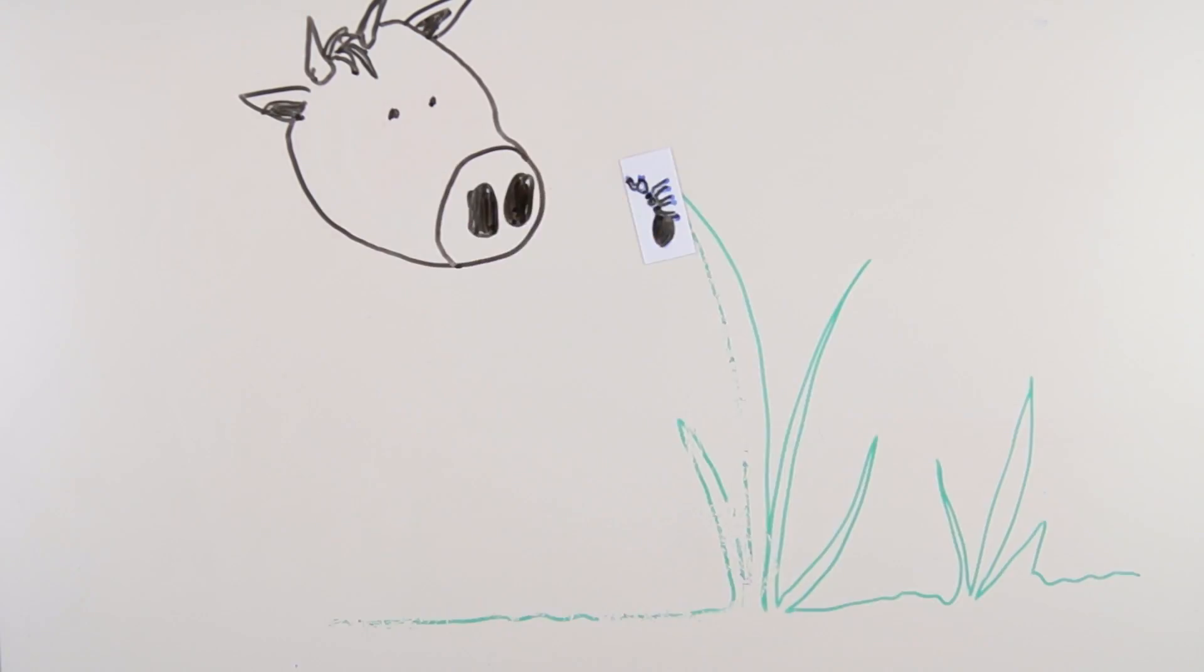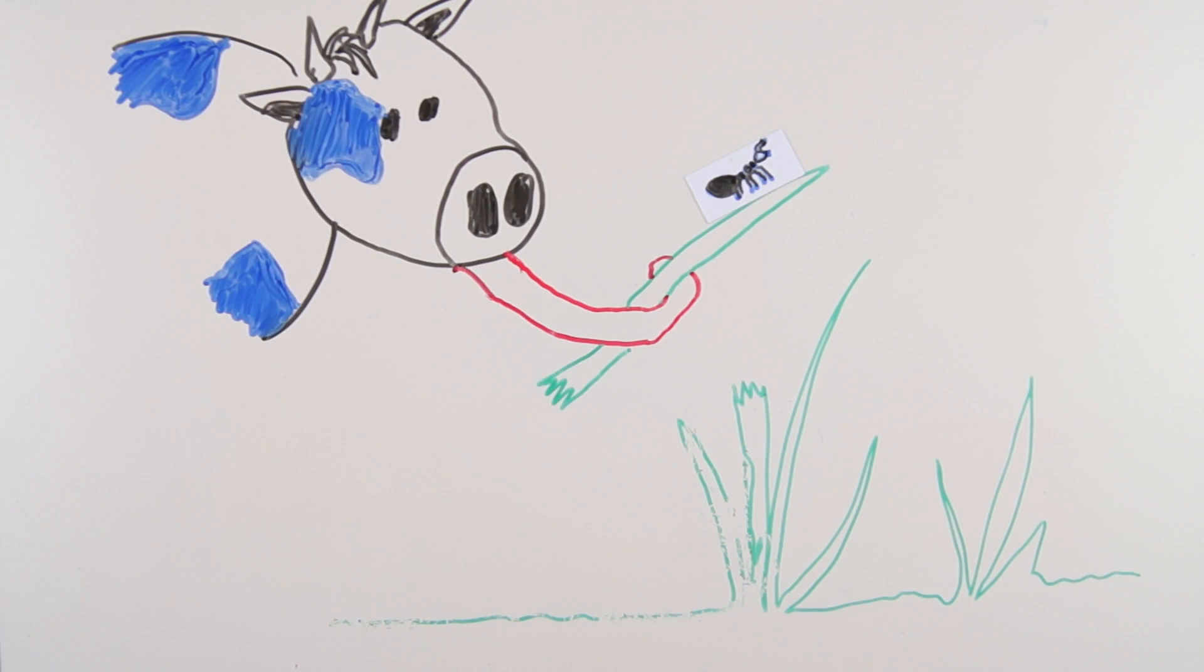This behavior increases the probability that the ant will be accidentally eaten by a cow passing by, in which the fluke will be able to reproduce and spread.